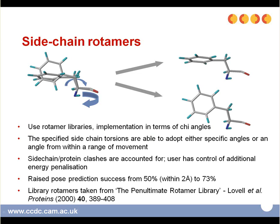There are two approaches to deal with protein flexibility. When you want to define up to 10 sidechains as flexible, you can do that using sidechain rotamers. There are rotamer libraries implemented in terms of chi angles. The specified sidechain torsions are able to adopt either specific angles or an angle from within a range of movement. Sidechain and protein clashes are accounted for, and the user has control over any additional energy penalization. Using sidechain rotamers, when appropriate, raises the pose prediction success from 50% to 73%, where pose prediction is deemed successful when a ligand is within 2 angstroms of what it should be.